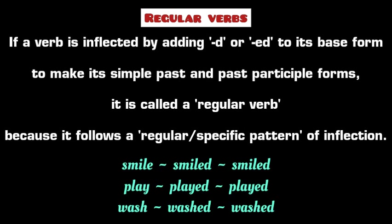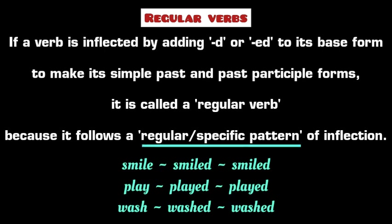So what are regular verbs in English grammar? If the base form of a verb is inflected by adding -d or -ed to its end to make its simple past and past participle forms, it is called a regular verb. A regular verb follows a regular or standard pattern of inflection — that is, the addition of -d or -ed to the base form to make its simple past and past participle forms.